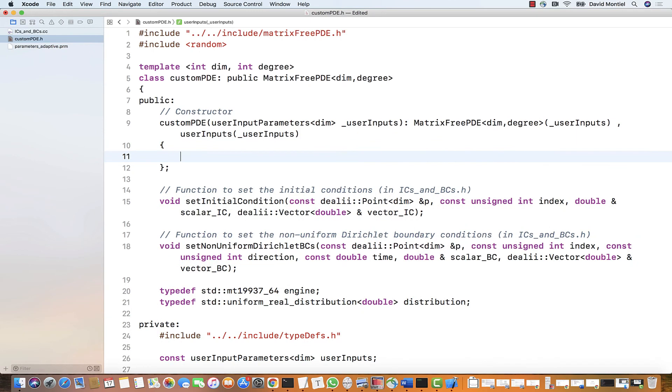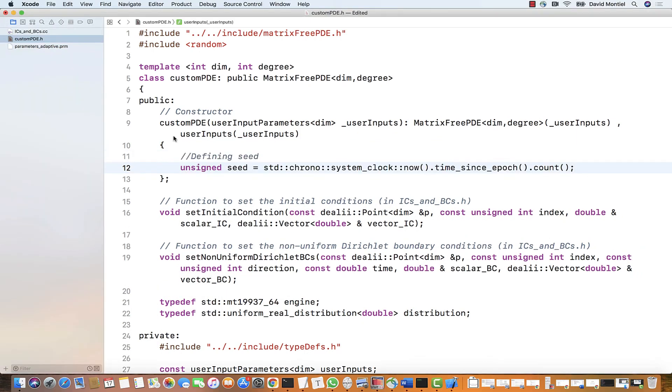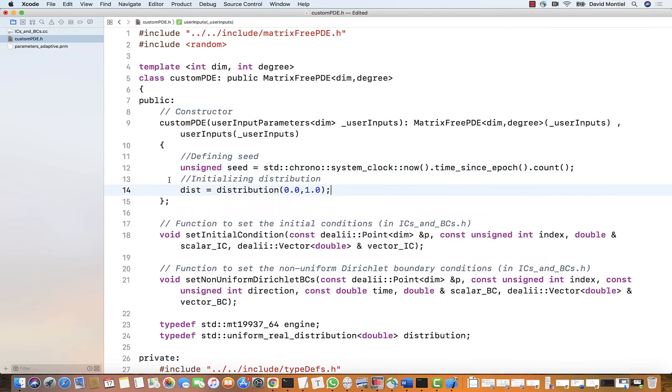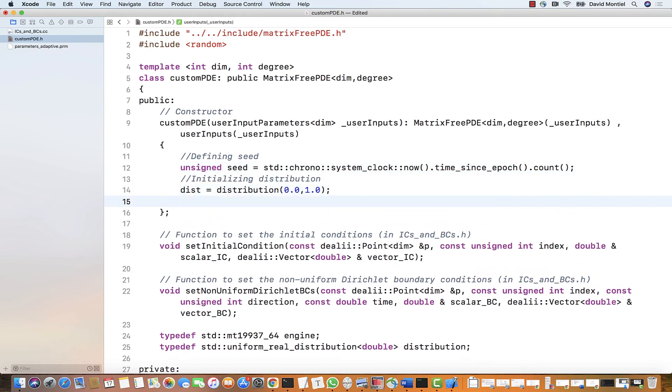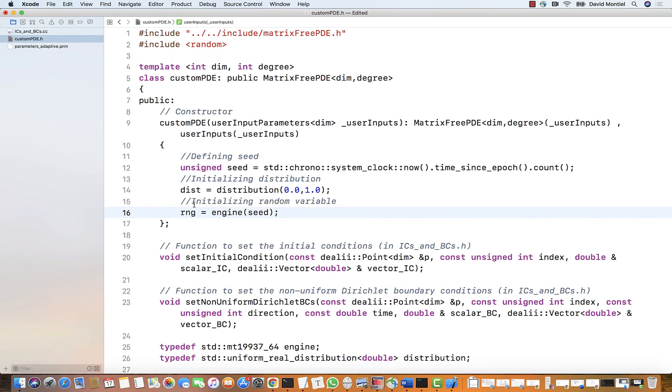Now we will need to initialize this distribution with a seed. And a convenient way of doing this is in the custom PDE constructor, which will be called each time an object of this class is created. So let's write this here. First, we define a seed based on the system clock. Then let's define the range for the distribution. And finally, we initialize the random number generator with the seed. So every time a method calls this generator, it will return the next entry of the sequence.